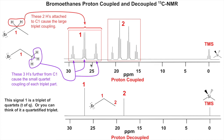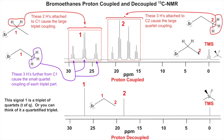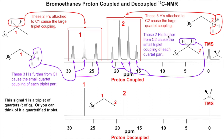Now signal two works the same way. The three hydrogens directly attached to carbon two cause large coupling, producing a quartet — one, two, three, four. Then the two hydrogens on carbon one, which are further from carbon two, cause each part of the quartet to be split into a triplet, with a smaller coupling constant because they're further away.